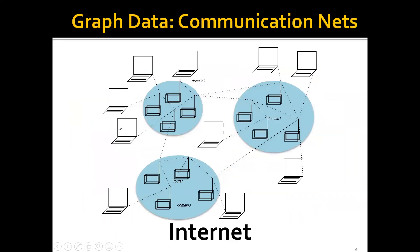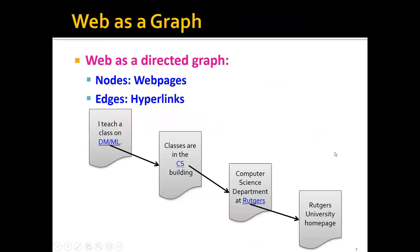We can also have communication networks, where each computer on the internet is actually a node. And interestingly, the web itself can be treated as a graph — it's actually a directed graph.